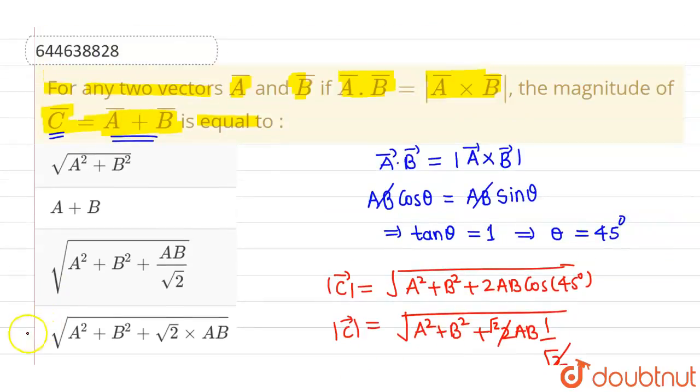So this is the required magnitude of the resultant vector. The correct option is option 4 and rest all options are incorrect. I hope you understood. Thank you.